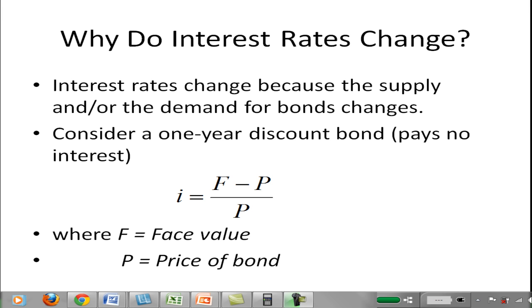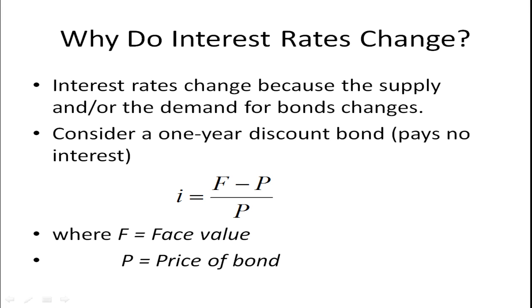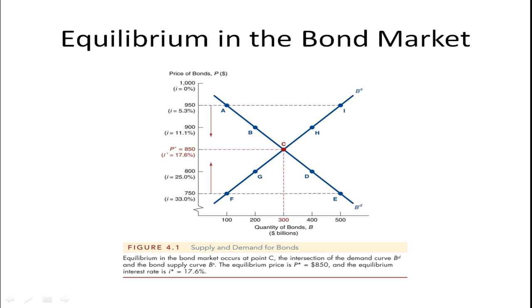Let's take a look at this in a supply and demand equilibrium graph. We have the supply of bonds slopes upward, the demand for bonds slopes downward. On the x-axis, we have the quantity of bonds. On the y-axis, we have price, and underneath in parentheses, an interest rate.